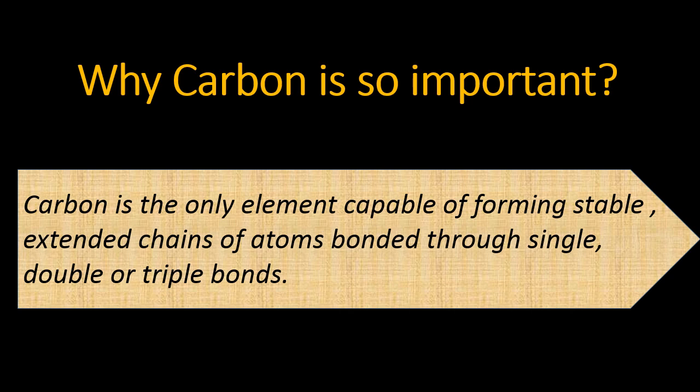When carbon forms a single bond with carbon, the compound is known as alkanes. When carbon forms a double bond with carbon, the compound is known as alkenes. And when carbon forms a triple bond with carbon, the compound is known as alkynes.